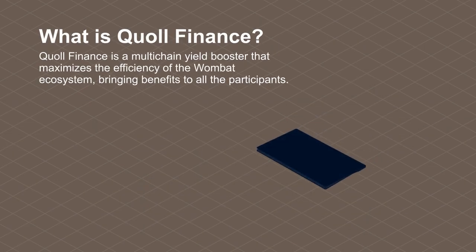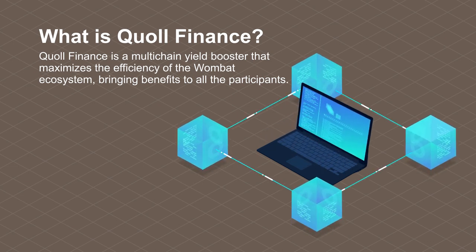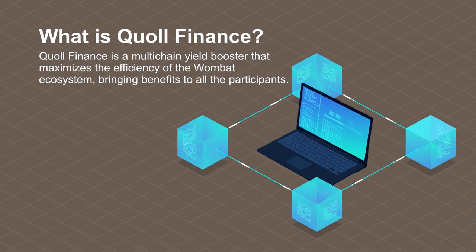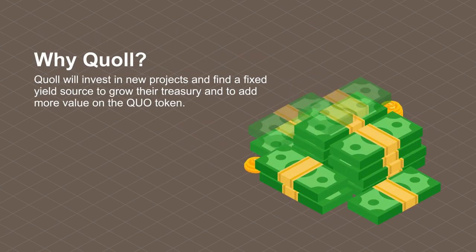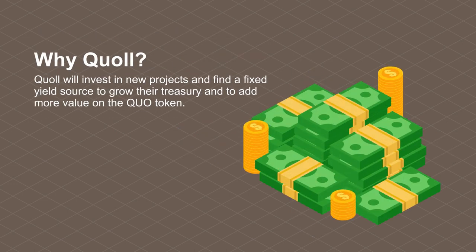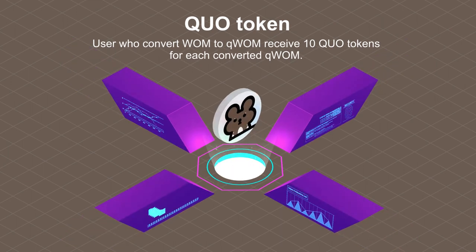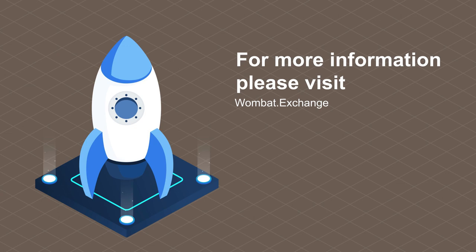Quoll Finance is a multi-chain yield booster that maximizes the efficiency of the Wombat ecosystem, bringing benefits to all participants. By facilitating users on different blockchains to deposit to Wombat with just one click, Quoll provides a seamless and efficient multi-chain experience. Quoll will invest in new projects and find fixed yield sources to grow their treasury and add more value to the QUO token, with an investment DAO managed by core members, early supporters, and advisors. Users who convert WOM to QWOM receive 10 QUO tokens for each converted QWOM. For more information, please visit wombat.exchange or join their Telegram group.